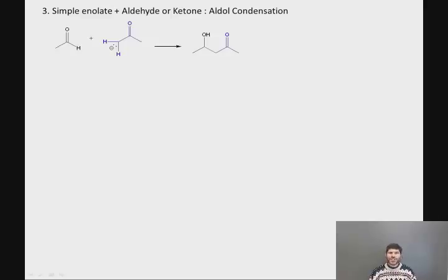So the reaction of a simple enolate with an aldehyde or ketone is called the aldol condensation. That's because the product is a beta-hydroxy ketone in this case, which is also, as we will see in a subsequent lesson, referred to as an aldol. The aldol condensation is a very important reaction, and we're going to spend several lessons in this unit discussing the aldol condensation.